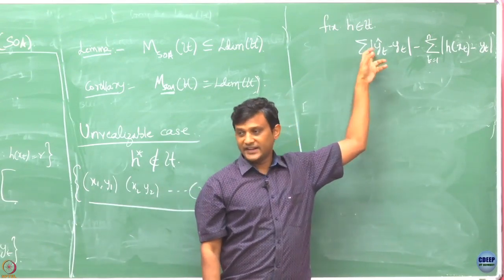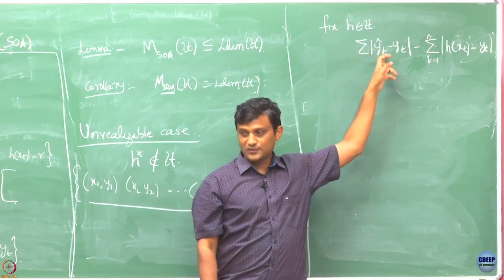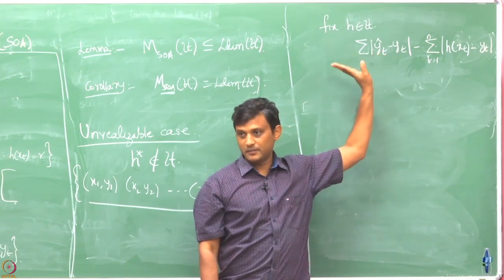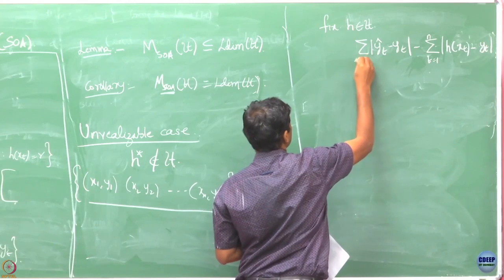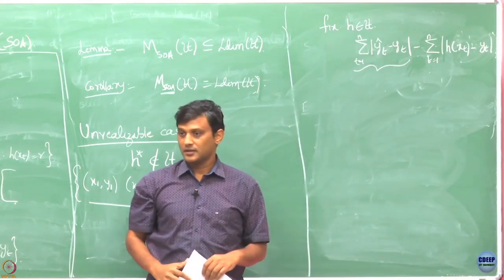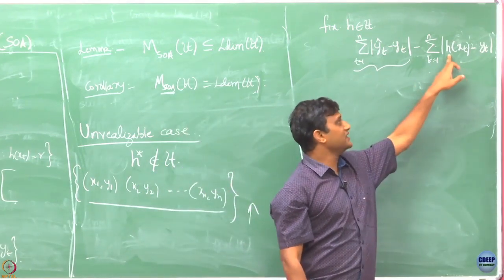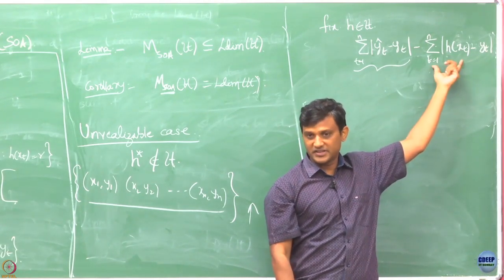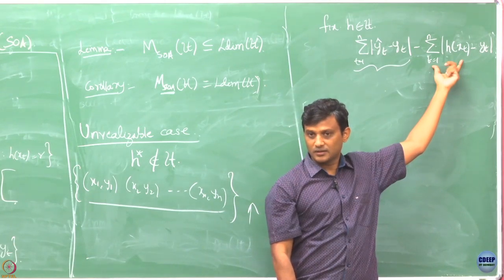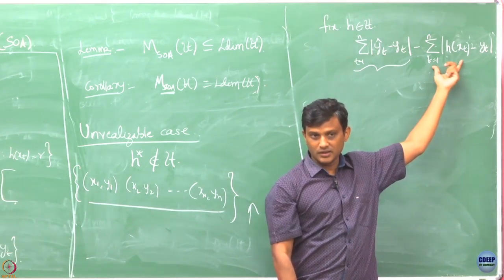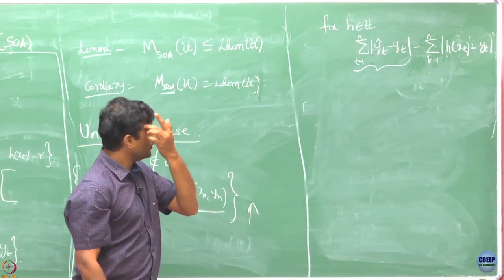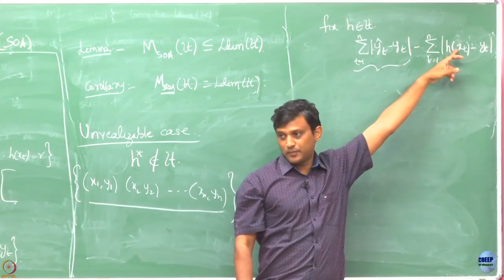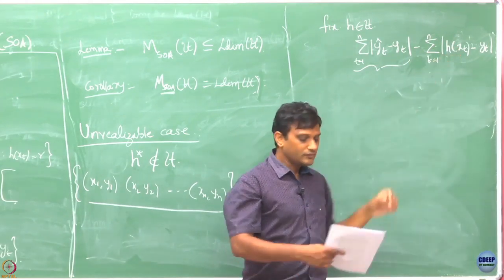In the first part, Y_t-hat is what you predicted and Y_t is what was revealed. So Y_t-hat minus Y_t is the mistake you make — we are in a binary setting. Over t rounds, this is the number of mistakes you have made. Suppose you apply the same hypothesis h in every round — then this expression gives the number of mistakes that fixed hypothesis h would have made.